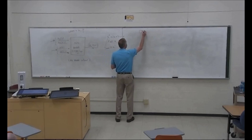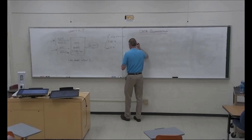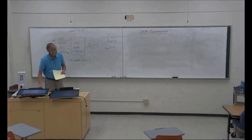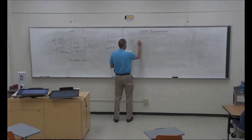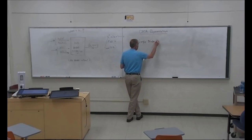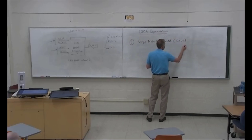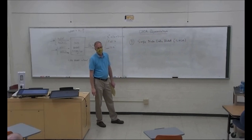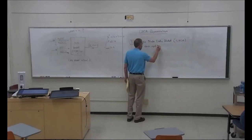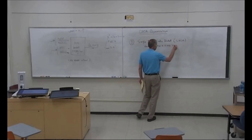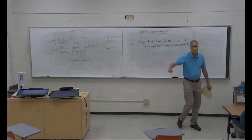So we have two different data representations. Number one: single node data models — SNDM for short — which is just what we've always been doing. For each input variable there is a single input neuron. No big deal essentially.